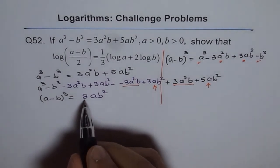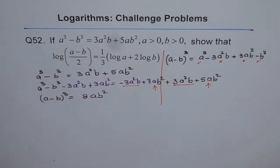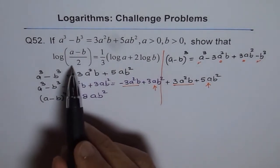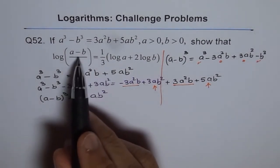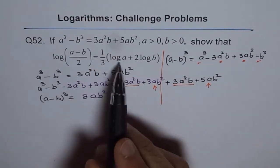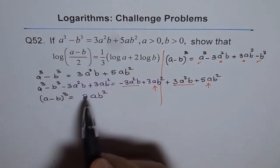Now, 8 can be written as 2 cubed. Remember that. So, 8 can be written as 2 cubed. Now, this is what we need to prove. A minus b and cube, well, 1 over 3, ab square, ab square. So, we are already close to it.